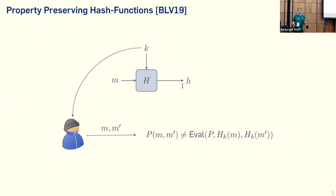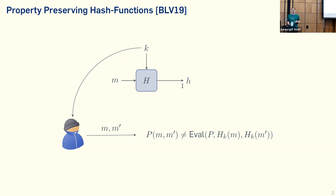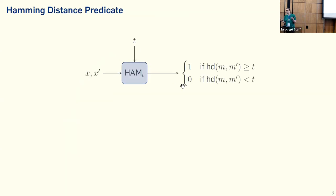Property-preserving hashing is basically the generalization of that, where we say we have some predicate P, not necessarily equality. We have some evaluation algorithm that allows us, given only the hash values, to evaluate this predicate P. An attacker should not be able to output two messages such that this evaluation is incorrect. The most natural extension of equality might be some distance metric. What we are looking at is Hamming distance. The Hamming distance predicate basically has some threshold T, and given two inputs, it checks whether the Hamming distance is greater than or equal to this threshold T, or is it smaller than T. We want to construct property-preserving hashing for this kind of predicate.